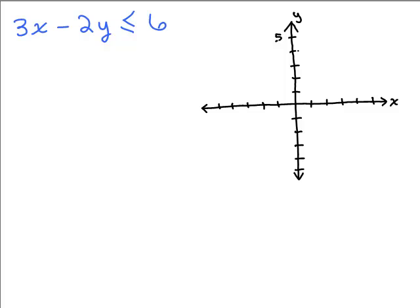Before I do them, put the video on pause and see if you can do this one all on your own. 3x minus 2y is less than or equal to 6. Step one.